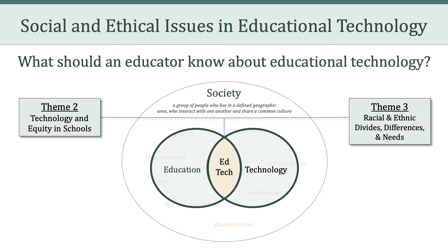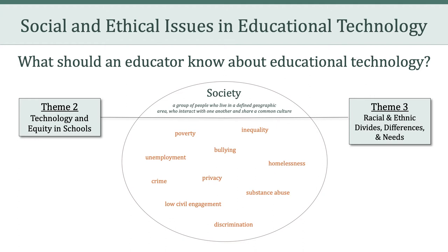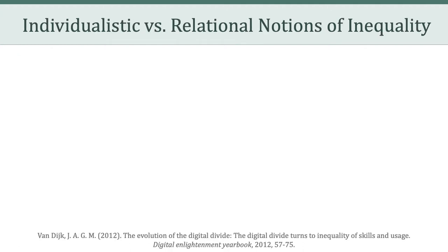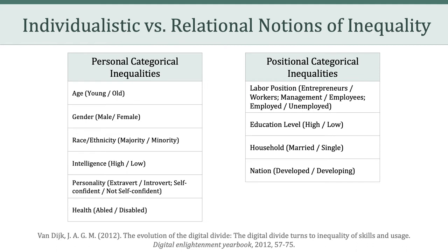To do this, we're going to shine a light on some of the underlying social problems that we talked about in the beginning of the semester. I want to talk about Von Dijk's individualistic versus relational notions of inequality. Von Dijk explained that research has shown that differential access to technology is related to individuals and their characteristics, such as level of income, their education, employment, age, sex, and ethnicity. However, Von Dijk argues that relational notions of inequality are just as important.